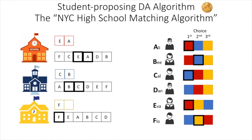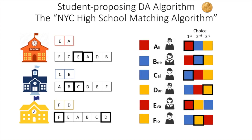We now look at the next choice of students without an assignment — at this point, only Dan. Dan's next choice is the red school. However, the red school is already full and Dan's priority there is lower than Eva's and Ali's, who are tentatively assigned. So Dan will not get that spot. Dan's next choice is the yellow school, which still has a seat available, so Dan gets assigned to the yellow school. Now all students have a tentative assignment, which becomes their final assignment: Ali and Eva to the red school, B and Cal to the blue school, and Dan and Flo to the yellow school.